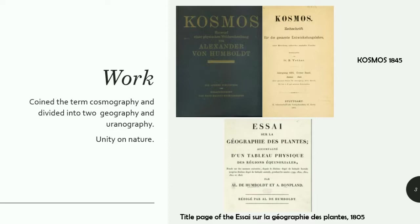In 1845, Cosmos was published and translated into several languages. Cosmos was a big revolution in the field of geography, as it was about the expeditions he conducted. Another very famous book, as you can see here — this is the first front page of Essai sur la Géographie des Plantes, published in 1805 and also translated into various languages. This book is specifically about various kinds of species of plants and animals. During his expedition, he discovered many plant species and animals, including the electric eel.